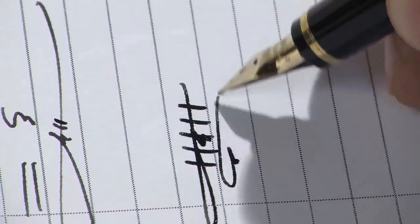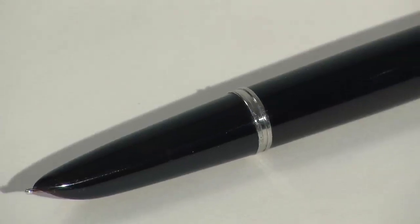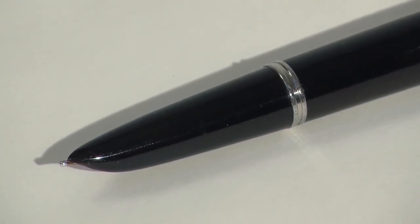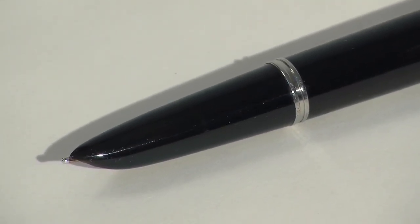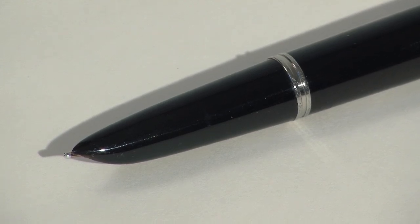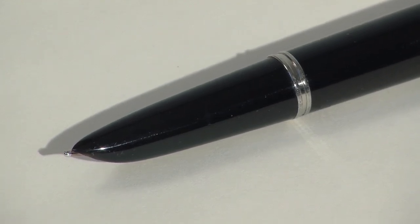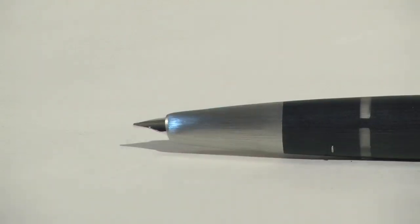Pilot describes the nib as hooded, although this is a misnomer. The best known example of a true hooded nib is the Parker 51. Only the very tip of the nib is visible, the greater part of it being inside the shell. Even the modern Lamy 2000 is described as semi-hooded.